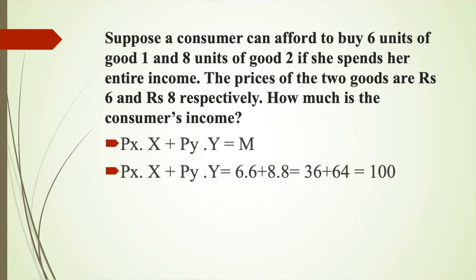Now let's move on to another question. Suppose a consumer can afford to buy 6 units of good 1 and 8 units of good 2 if she spends her entire income. The prices of the two goods are Rs 6 and Rs 8 respectively. How much is the consumer's income? Using the budget line equation Px × x + Py × y = M, where Px = 6, Py = 8, x = 6, and y = 8, we get M = 6×6 + 8×8 = 36 + 64 = 100. So the consumer's income is Rs 100.